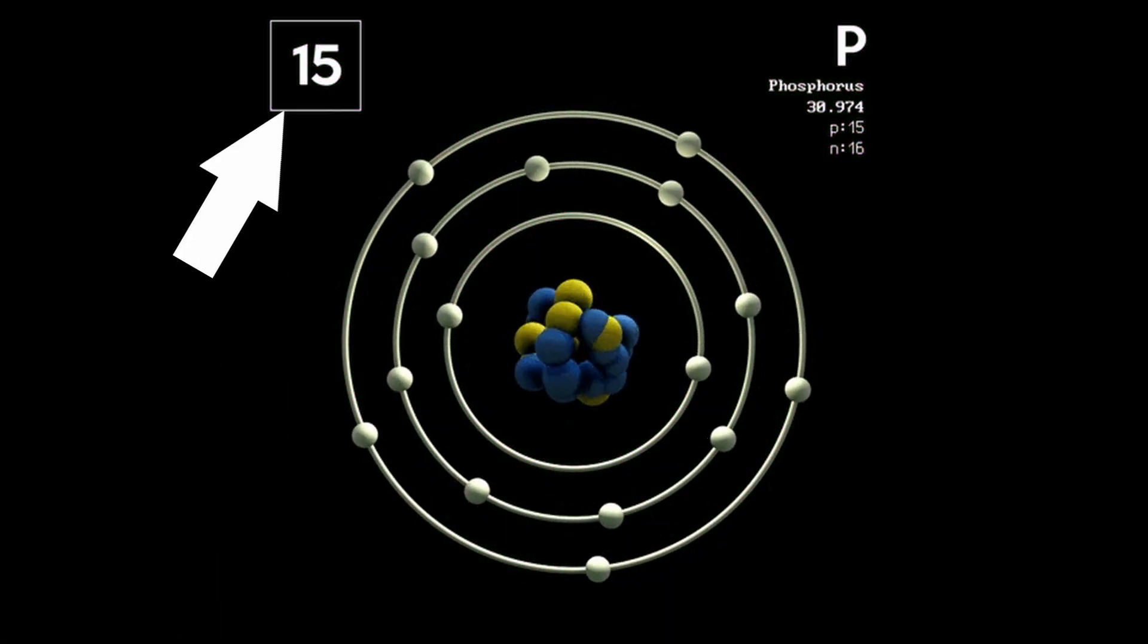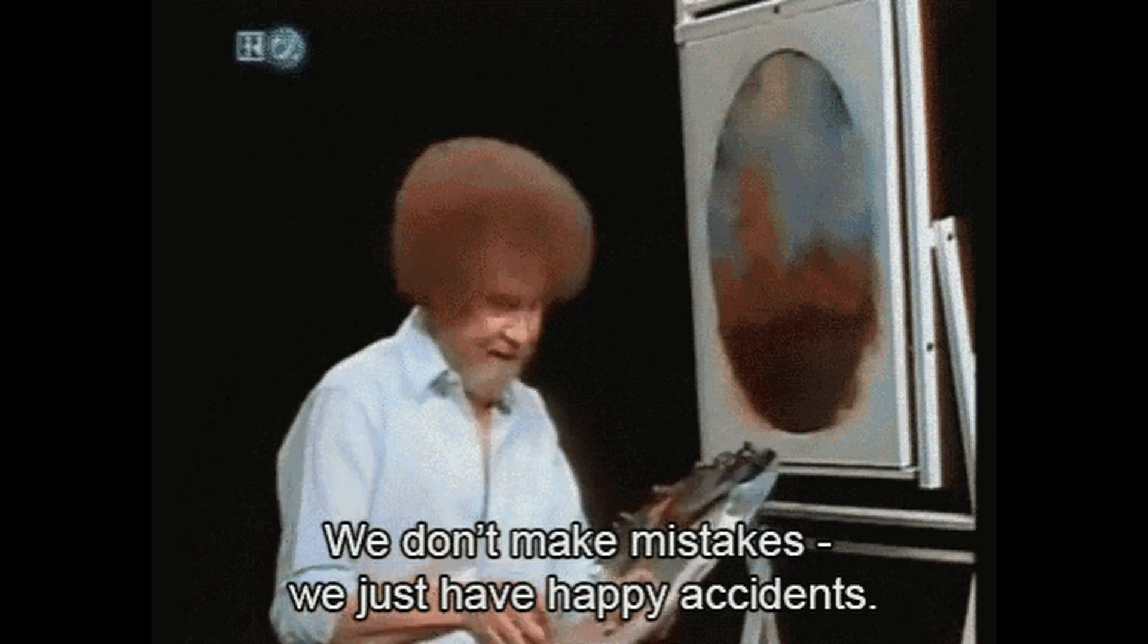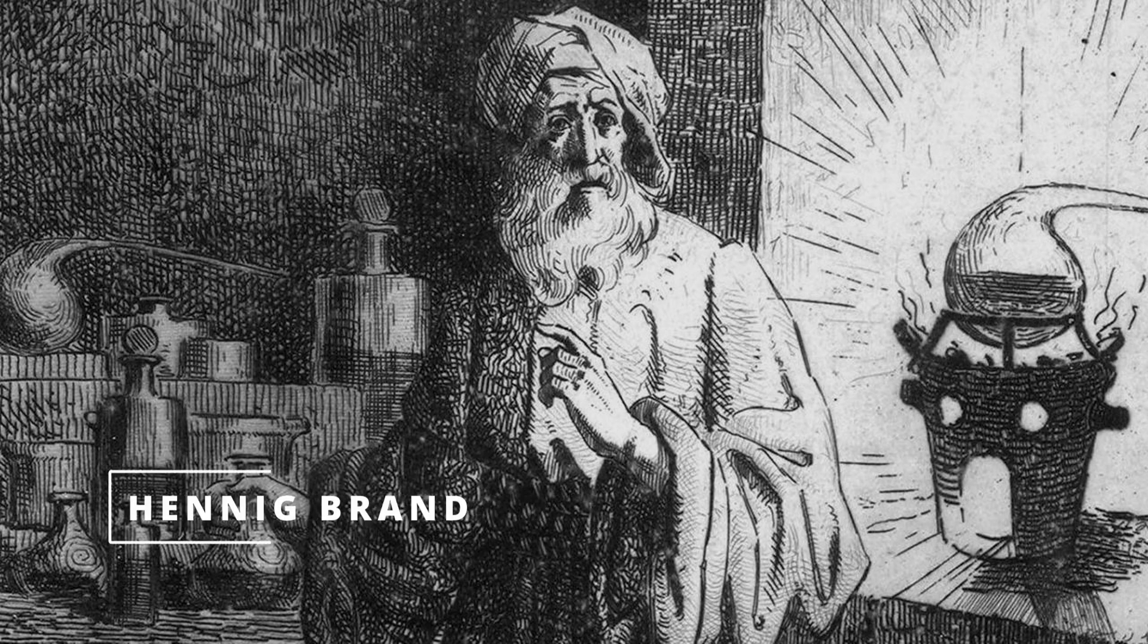Phosphorus, the 15th element on the periodic table, first discovered accidentally in 1669 by German alchemist Hennig Brandl while he attempted to turn urine into gold.